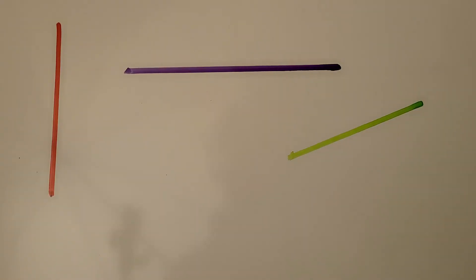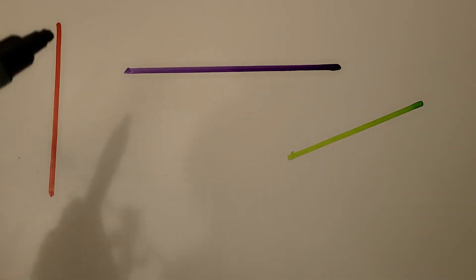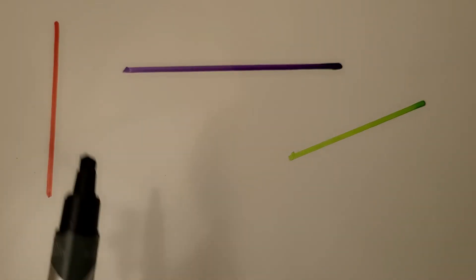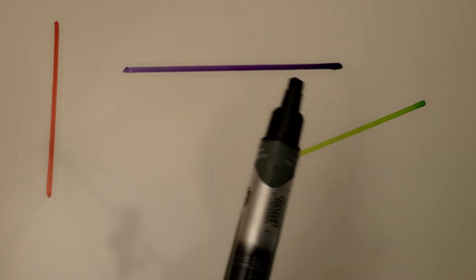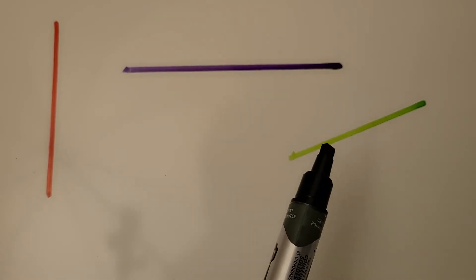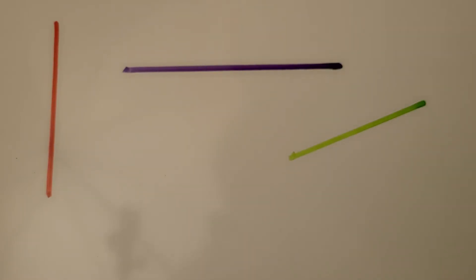These lines are straight — they don't curve at all. Some lines are straight and some are not. This red one is straight, this purple one is straight, and this green one is straight. There are no curves.